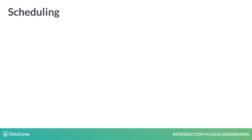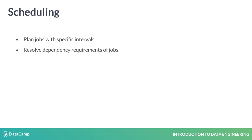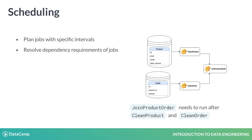Third, scheduling tools help to make sure data moves from one place to another at the correct time with a specific interval. Data engineers make sure these jobs run in a timely fashion and that they are run in the right order. Sometimes processing jobs need to run in a particular order to function correctly. For example, tables from two databases might need to be joined together after they are both cleaned. In the following diagram, the join product order job needs to run after clean product and clean order ran.